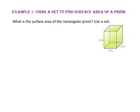In example one, we will use a net to find the surface area of a prism. What is the surface area of the rectangular prism? Use a net. Let's start by drawing the net. The net will have two bases — the top and the bottom — both with base length four and height three. The lateral faces include two faces — the front and the back — with a base length of four and a height of five, and the right and the left with base length three and height of five.